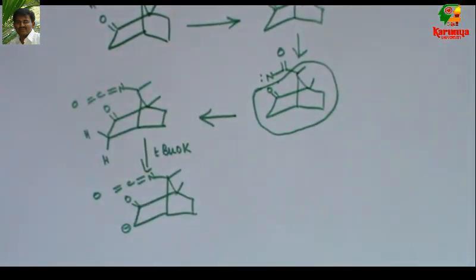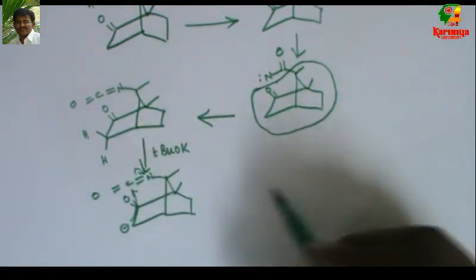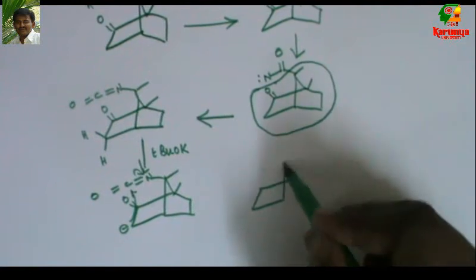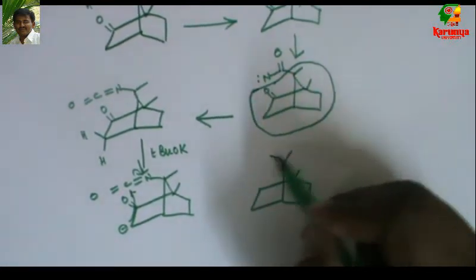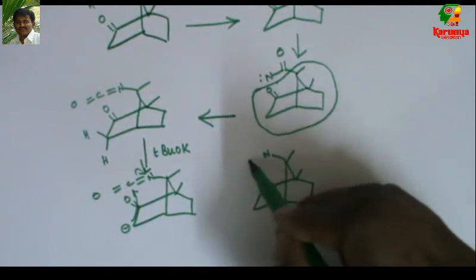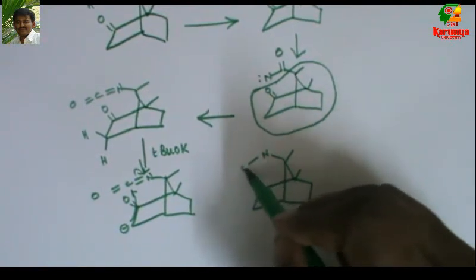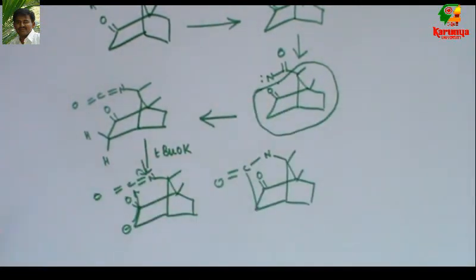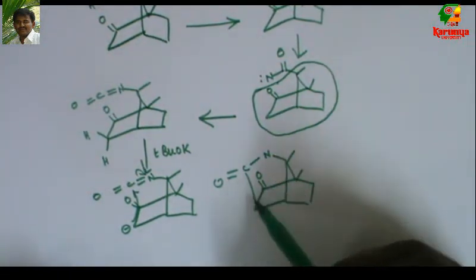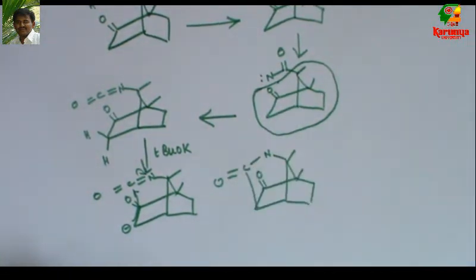Now the base abstracts this proton to give the corresponding carbanion. This minus charge attacks here to give a tricyclic compound. You can see here - it was already bicyclic. Now one more ring has been formed, so it is a tricyclic compound now.